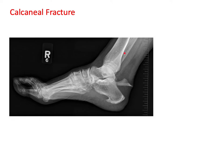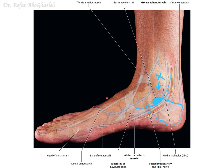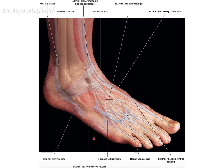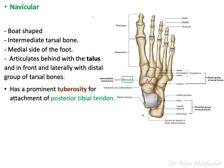Here is an X-ray showing the calcaneus with a calcaneal fracture. Remember: the talus articulates with the navicular, and the calcaneus articulates with the cuboid. For surface anatomy, note the small bony prominence of the base of the fifth metatarsal, which you can feel on the lateral side of the foot.